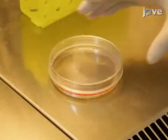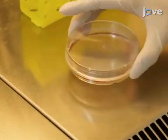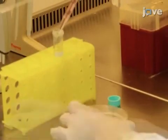Then gently swirl the culture dish a few times and transfer the floating cells into a plastic 15-milliliter conical tube.